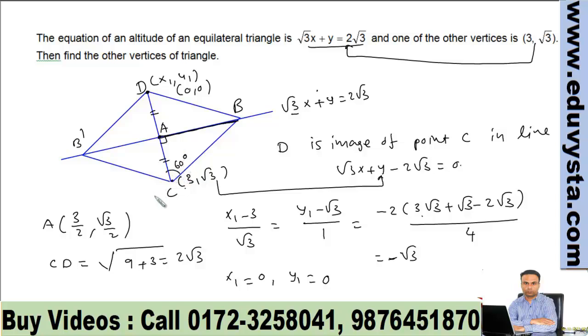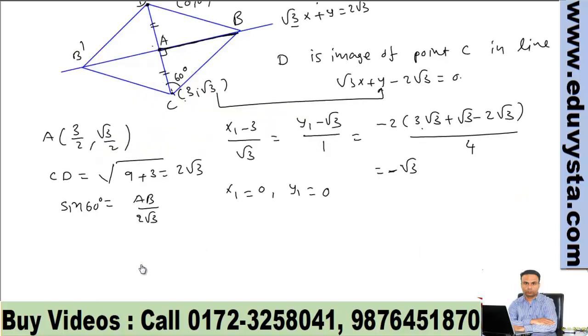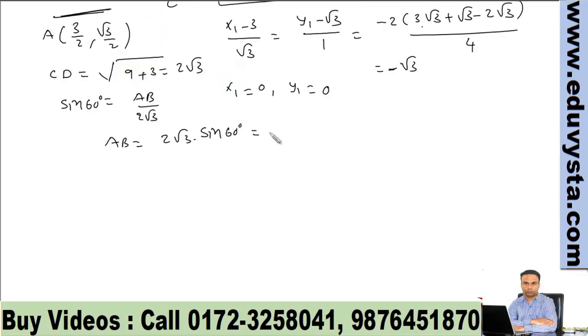This angle is 60 degrees. Then in triangle CAB we have, use sin 60° = AB/BC. Since the triangle is equilateral, BC is also 2√3. So AB = 2√3 × sin 60° = 2√3 × (√3/2) = 3.